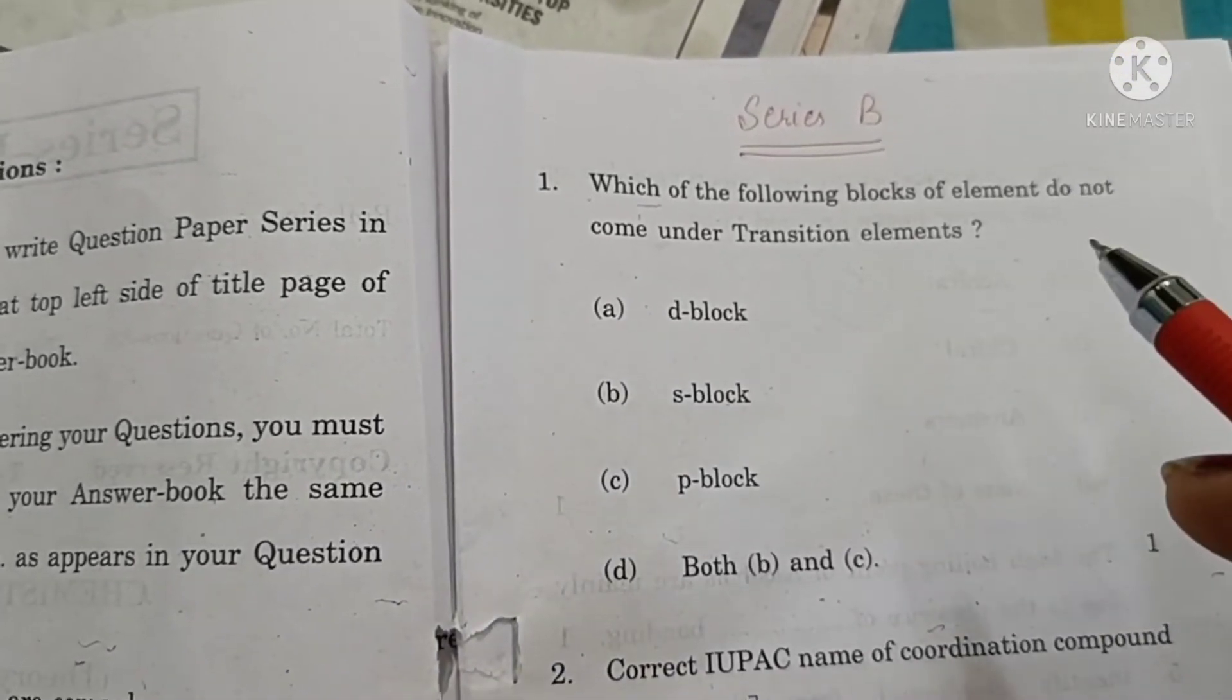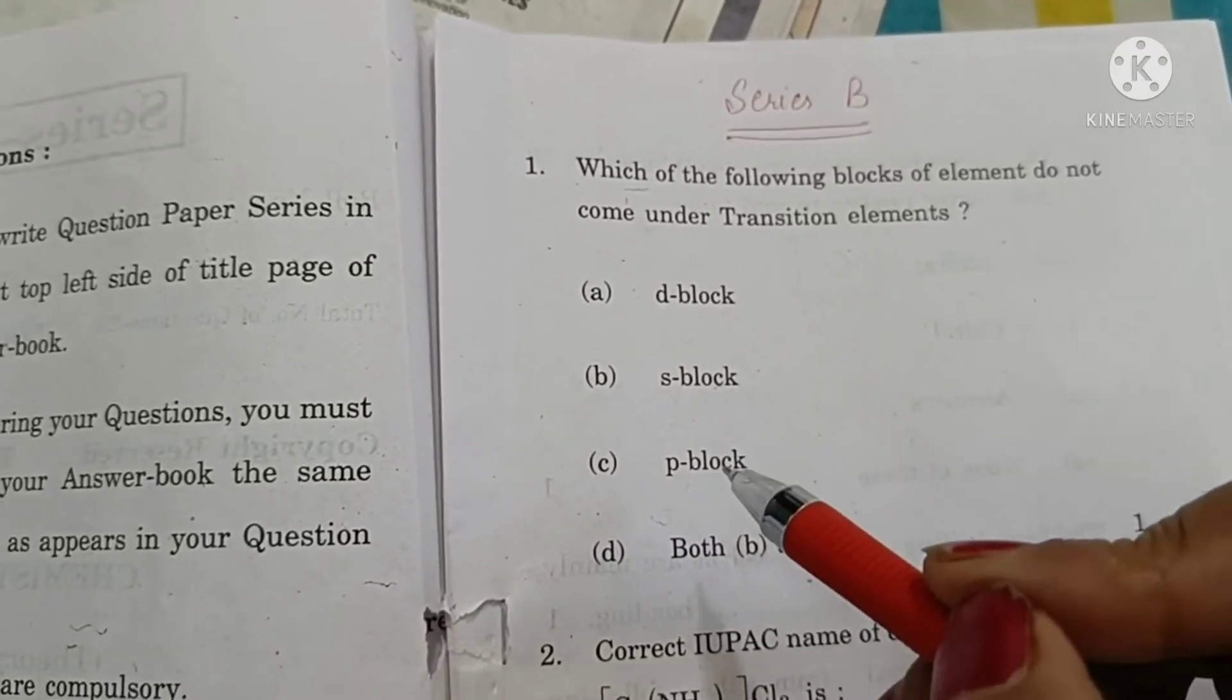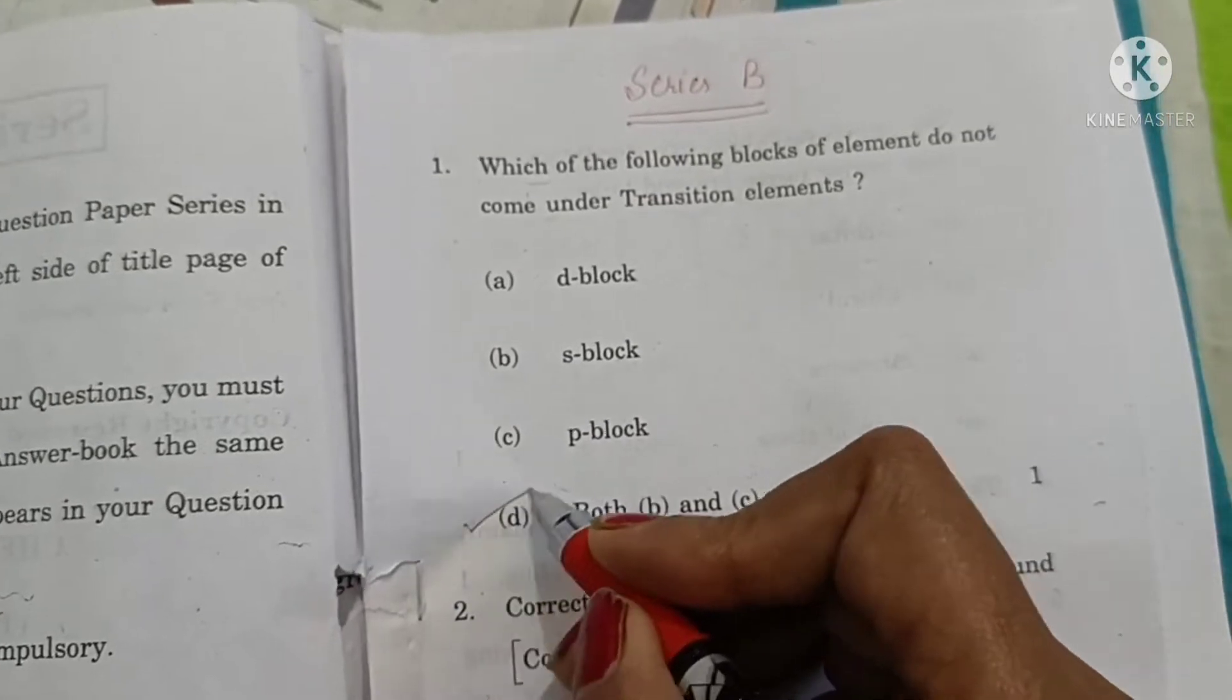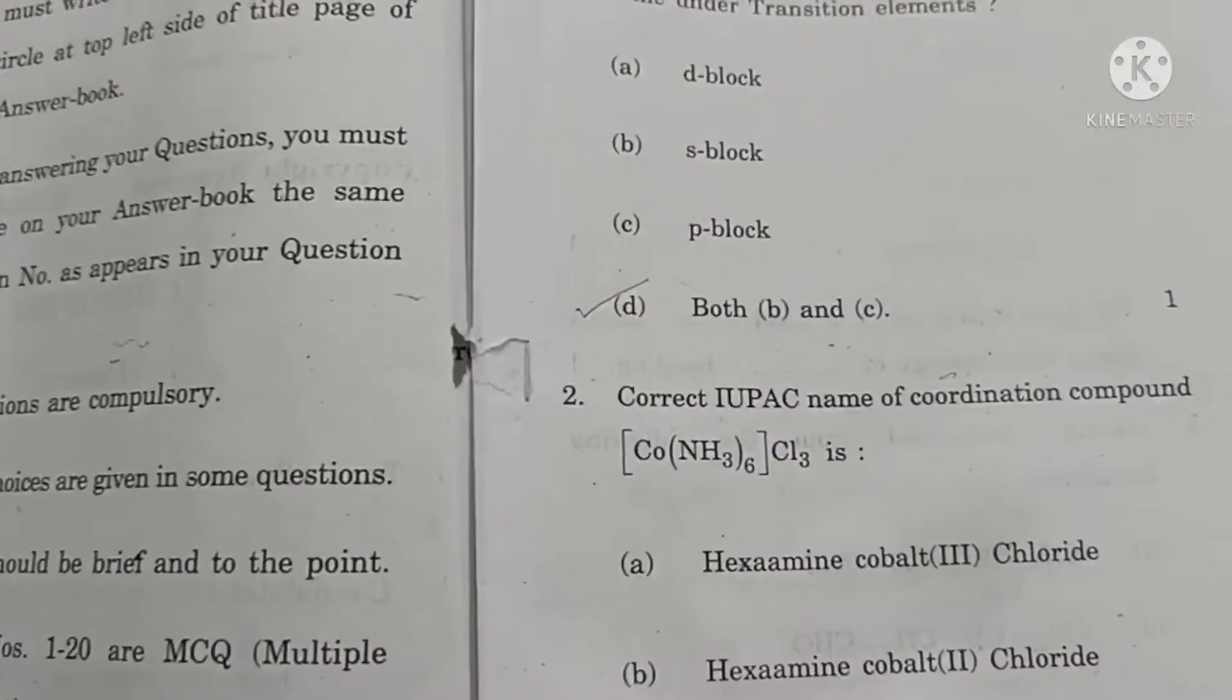Which of the following blocks of elements do not come under transition elements? S block and P block both are representative elements. So, option D both B and C do not come under transition elements.